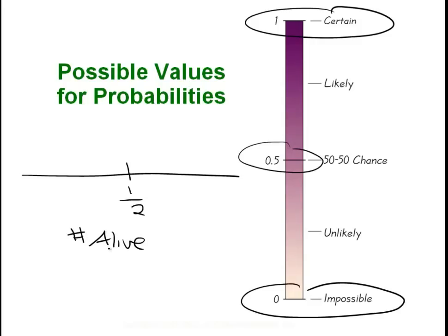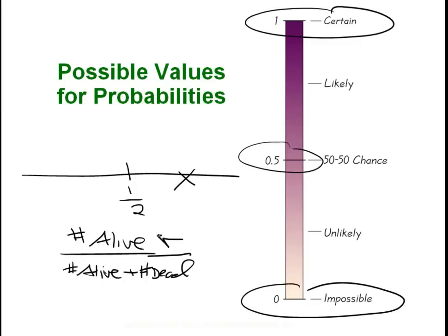But in the practical world you'd use real numbers: the number of people alive today over the number alive plus the number dead. We're pretty good bookkeepers and have a good idea of how many people are alive and how many have ever lived and died. According to this individual's figures, this probability is greater than one half because the number alive is bigger than the number dead. Because of our positive growth rate, this number is actually approaching one.